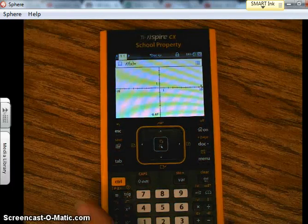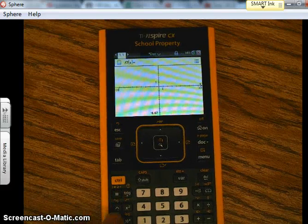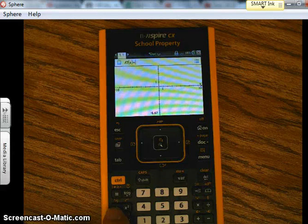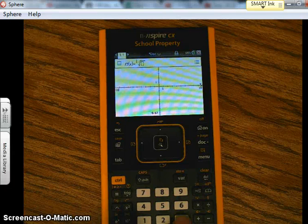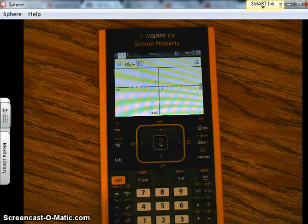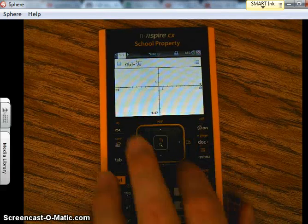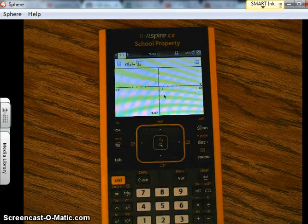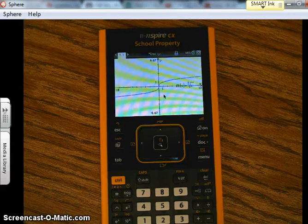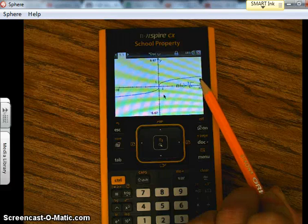So we want to graph the cube root function. If we press control and then the caret key here, we'll put the 3 in for the cube root, arrow over, put the x in. Okay, when I was graphing this earlier, press enter, it's working now but it only graphed this portion earlier and I couldn't figure out why.